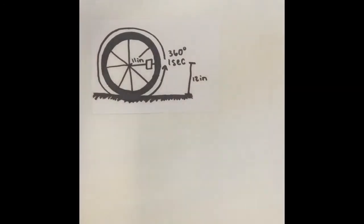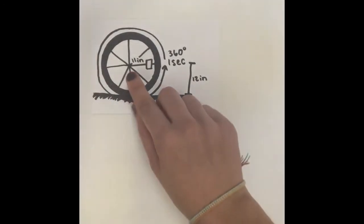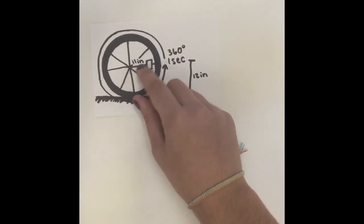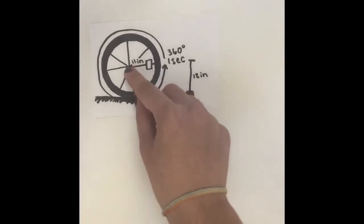First off, the reflector is 11 inches away from the center of the bike's tire. Here's a diagram of that showing the reflector which is 11 inches on the spokes of the bike's tire which is 11 inches from the center of the bike.